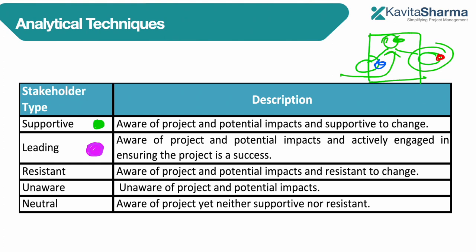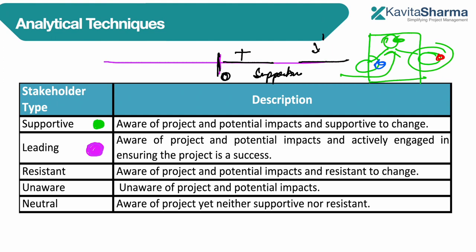On a scale, if neutral is zero, then positive means supportive. If they want to actively do work, you can give them active tasks. You need all hands to be available, so these people who are leading are available — they can be used and allocated in the program or project. These are called the active or leading stakeholders.